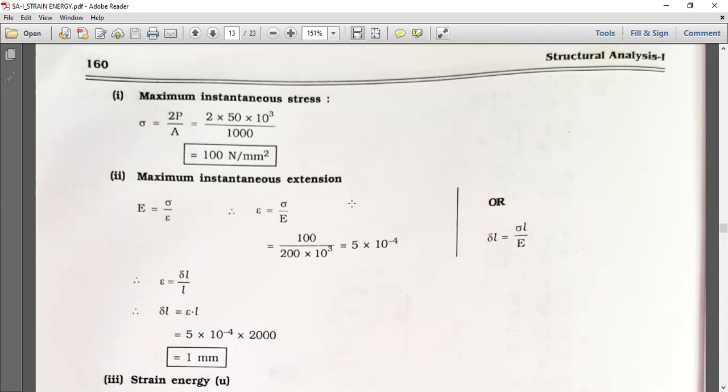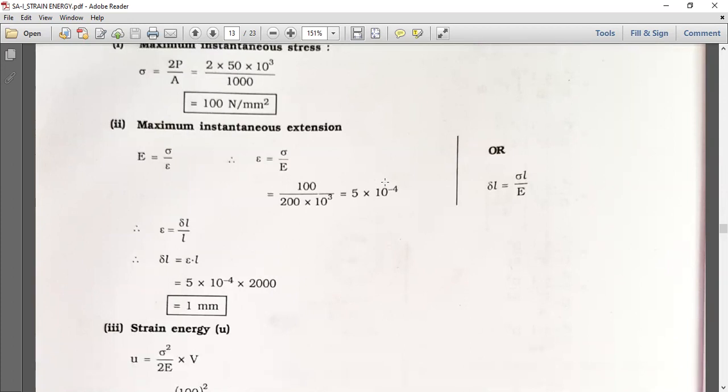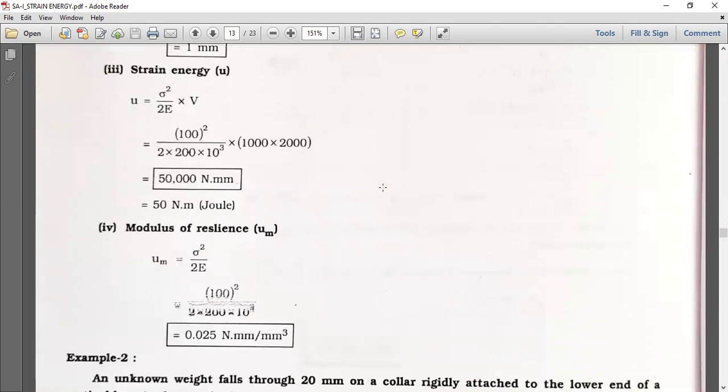Now third portion is strain energy. U is equal to sigma square divided by 2E times V. This is the equation we already know from theory. Put the values: sigma equals 100 square, E equals 200 times 10 raised to 3, V equals volume which is length times area. Then U equals 15 newton meter, also denoted by joule.